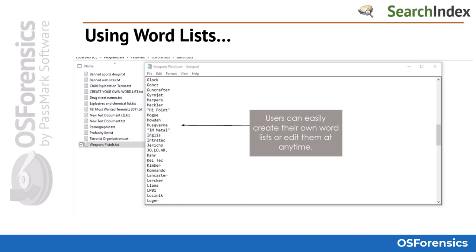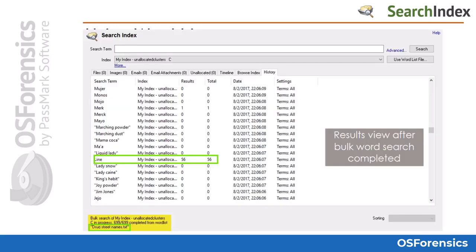Single word terms require nothing but the word typed out. If the search criteria includes more than one word per line, you will need to wrap the search phrase in quotation marks. Here are the results of a search using a word list, and we can see each search term being searched for and the number of instances it is found in the index being searched.